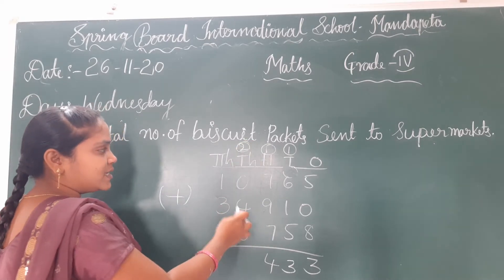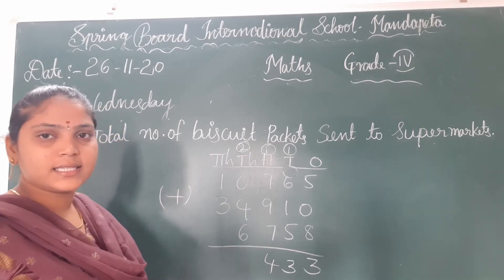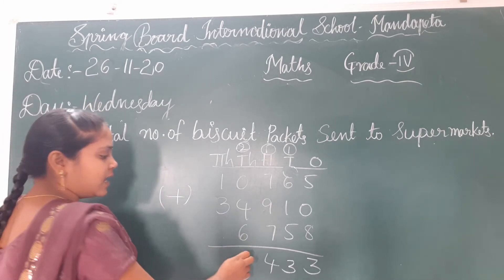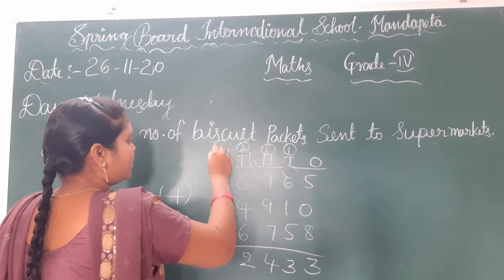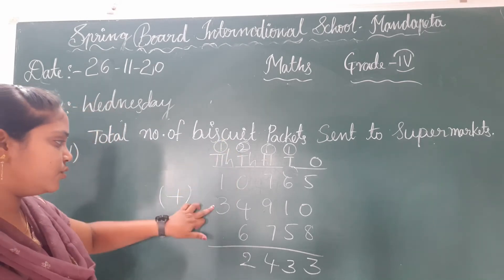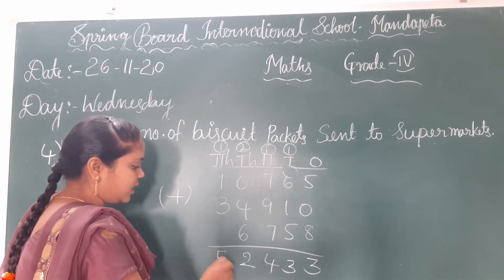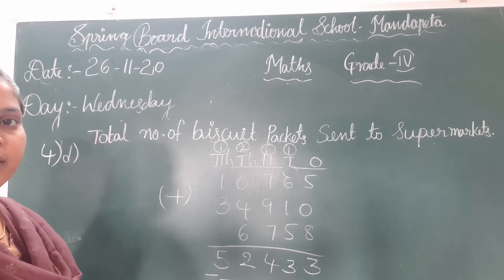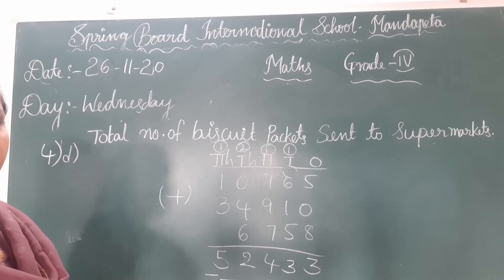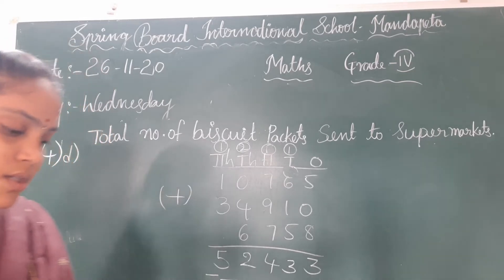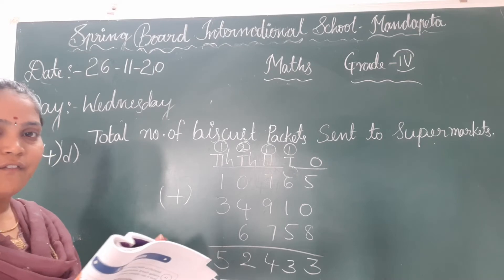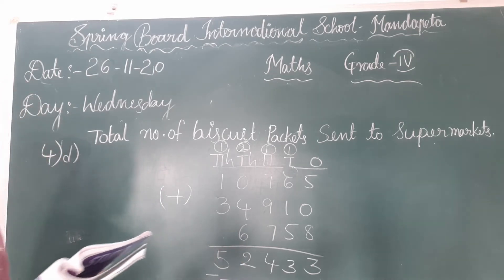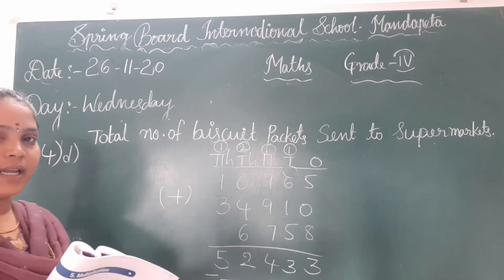Continuing the addition: 2 plus 4 is 6, and 6 plus 6 is 12. Then 1 plus 1 is 2, and 2 plus 3 is 5. So the total is 52,433 biscuit packets sent to the supermarkets.